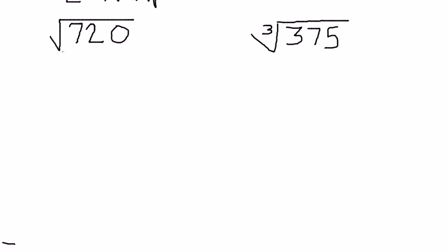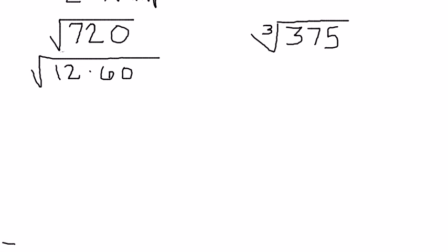Let's go back to 720 and pretend like we don't know that it's 144 times 5. Maybe I look at that 720 and think, 720 — that's like 72, that's like 12 times 6. Although this is 720, so this would be 12 times 60. And I'll just keep this inside a single radical, just keep breaking the 720 down, rewriting it as a product of factors. 12 is 3 times 4.